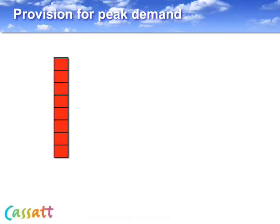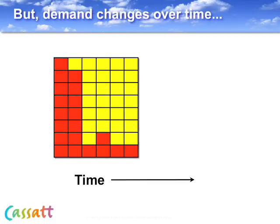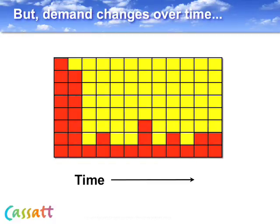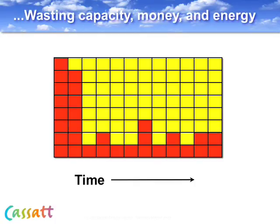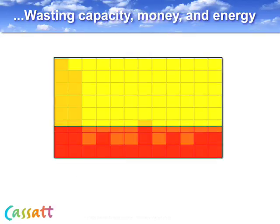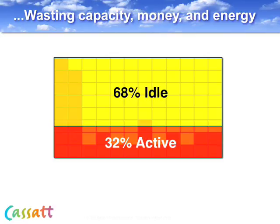So far, so good, but here's where the dynamic nature of the real world undermines efficiency. We plan our capacity for peak demand, but demand varies over time. This means that anytime the demand is less than peak, we're wasting capacity, and that waste can become very large. In this example, the servers are utilized at 32% on average over time — 68% of the resources are idle.